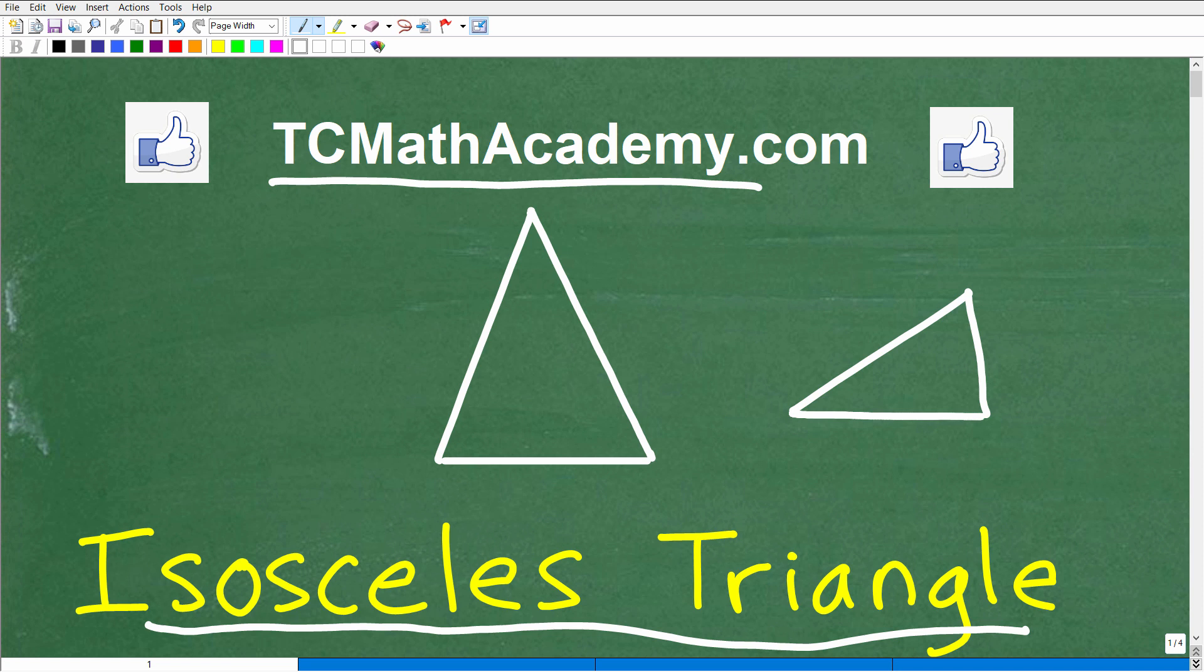For example, if I drew a little triangle, sketched out a triangle with a little square here in the corner, what does that indicate? Well, this is a right triangle. It's a special type of triangle, and that means here that this is a 90-degree angle.